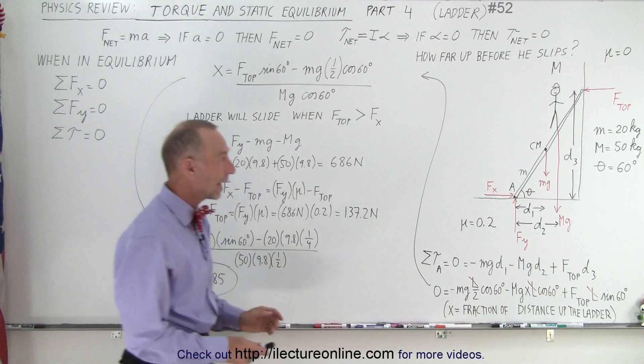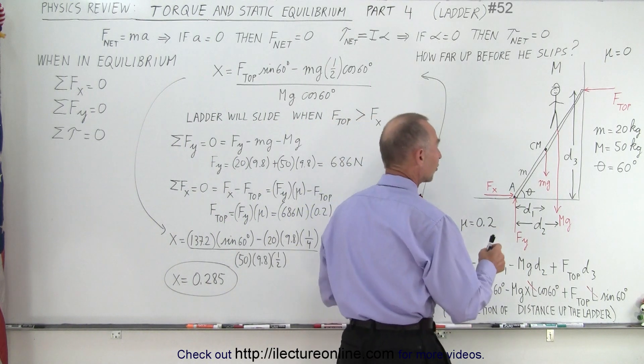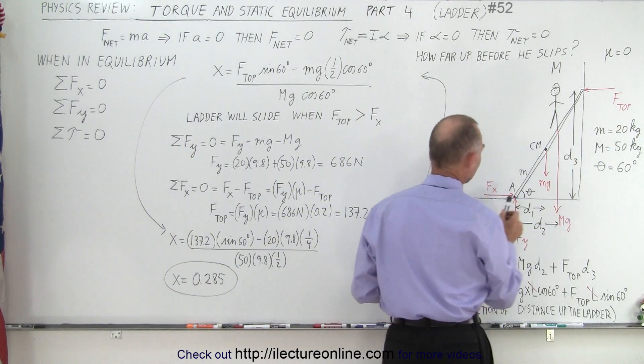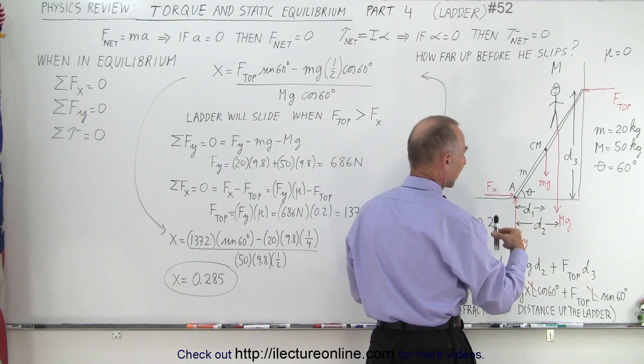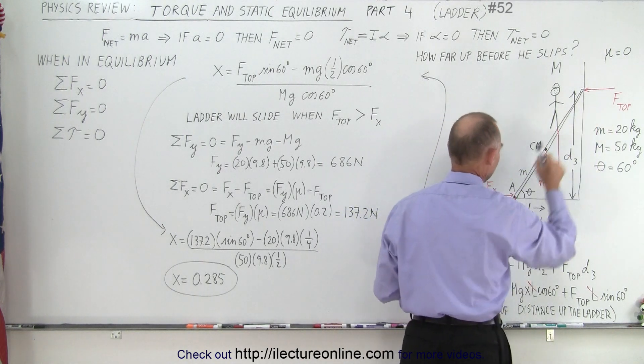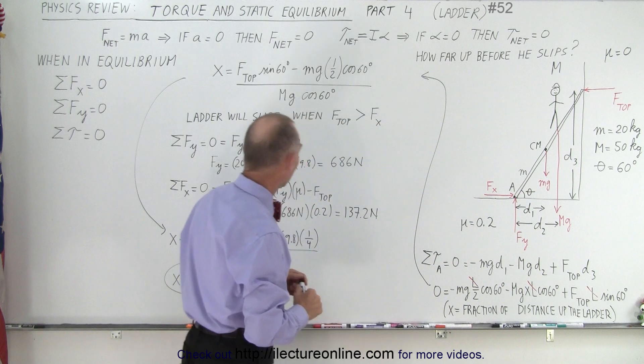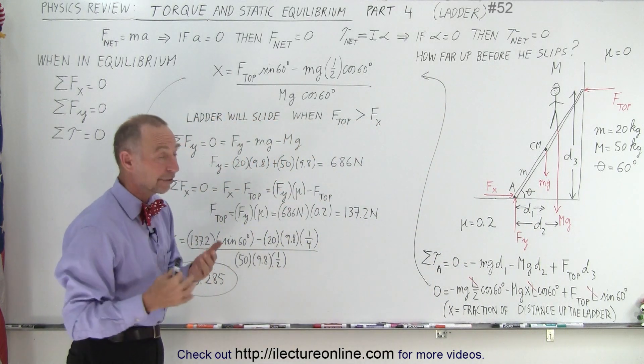But if the ladder is not going to slip F top always needs to be less than F sub x which is the friction force right here and eventually the ladder begins to slide when this one exceeds F sub x. So what we do here is we want to find the friction force.